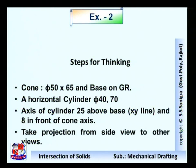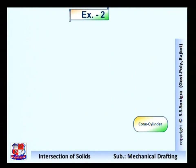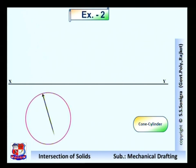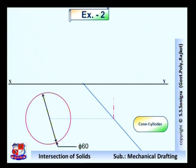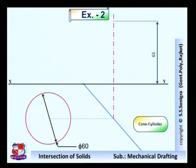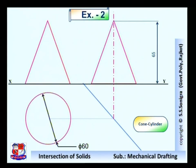Take projections from side view to other views. First draw the XY line. Draw the top view of the cone, that is a circle of diameter 60 mm. Draw the meter line and transfer the points from top view to the meter line. Draw the axis of the cone. The height of the cone is given as 65 mm. At a height of 65 mm, mark a point on the axis. Draw a triangle having height equal to 65 mm and base equal to 60 mm diameter. This is the front view of the cone.